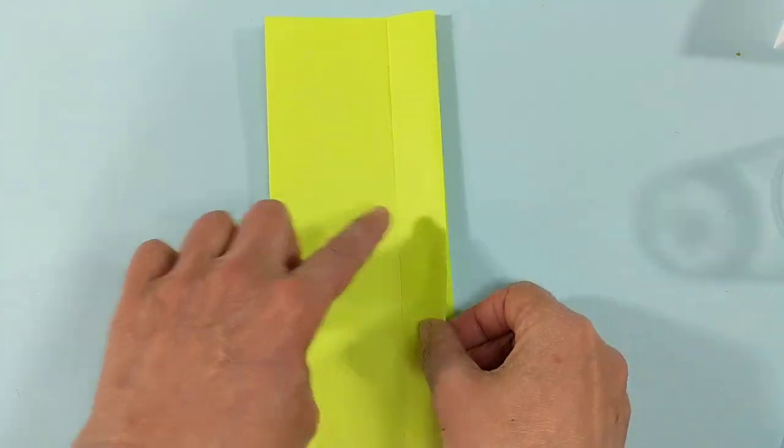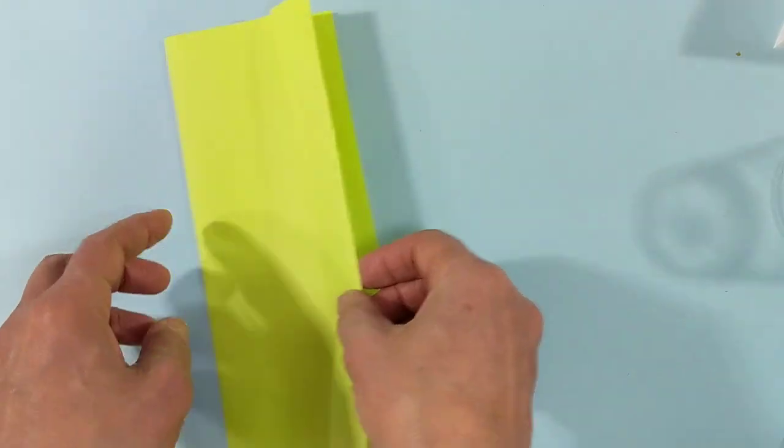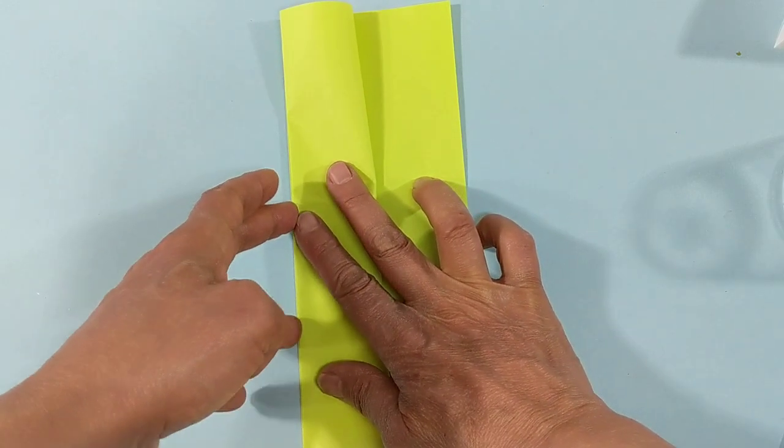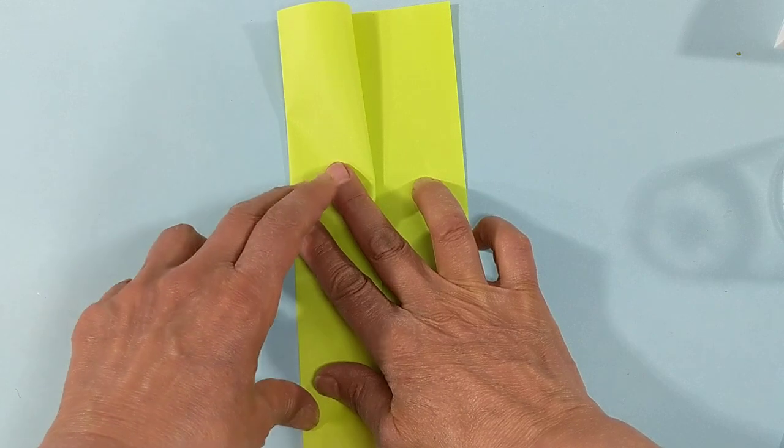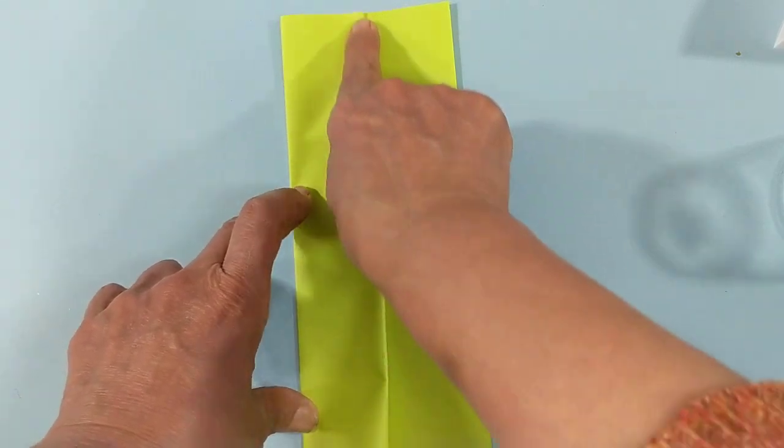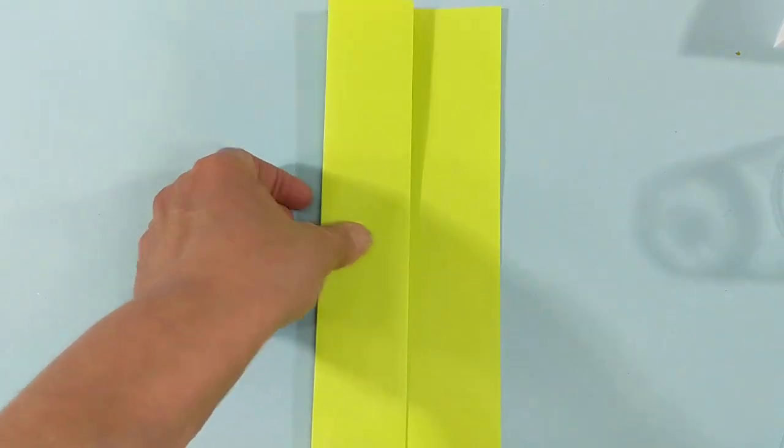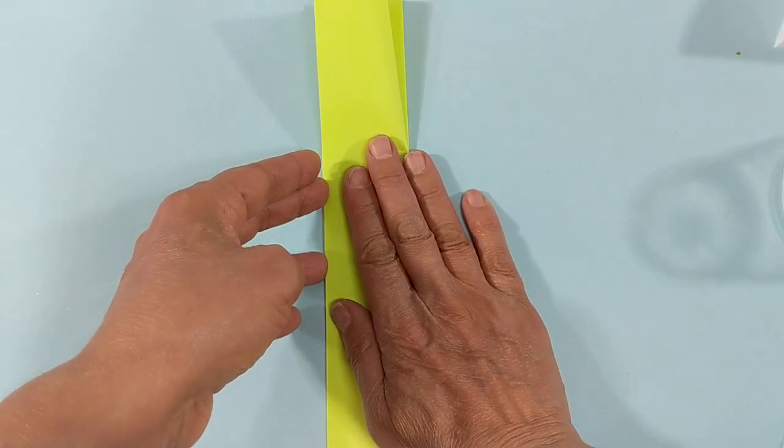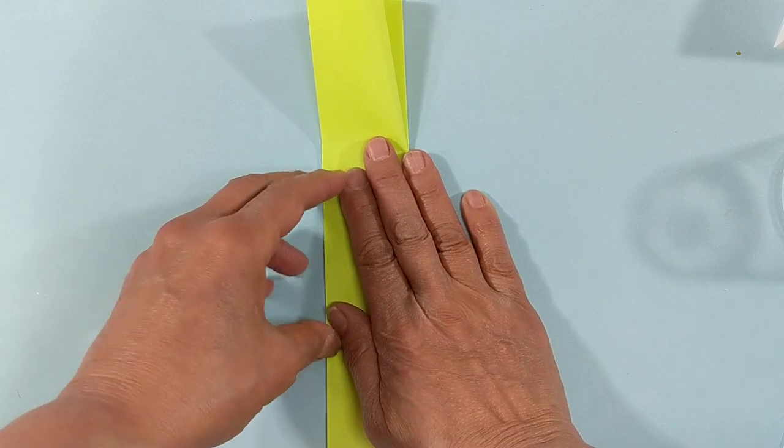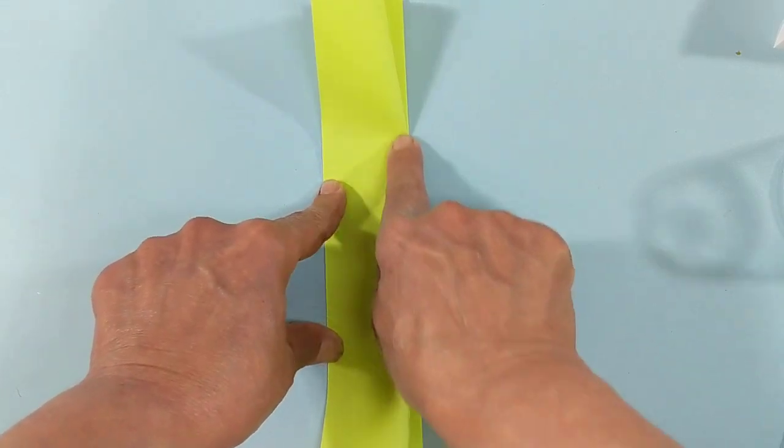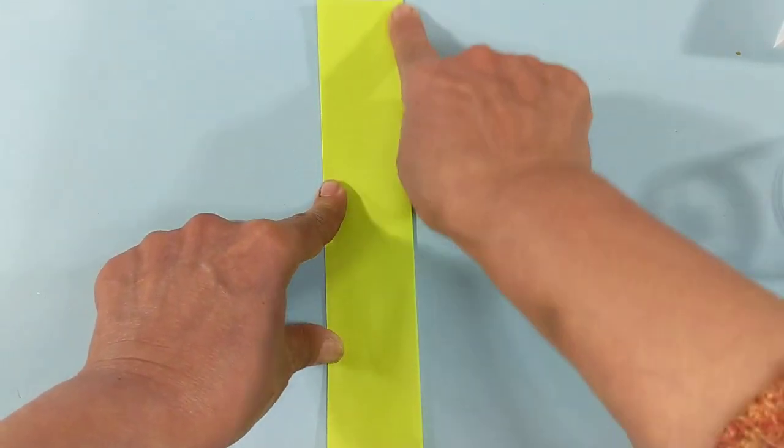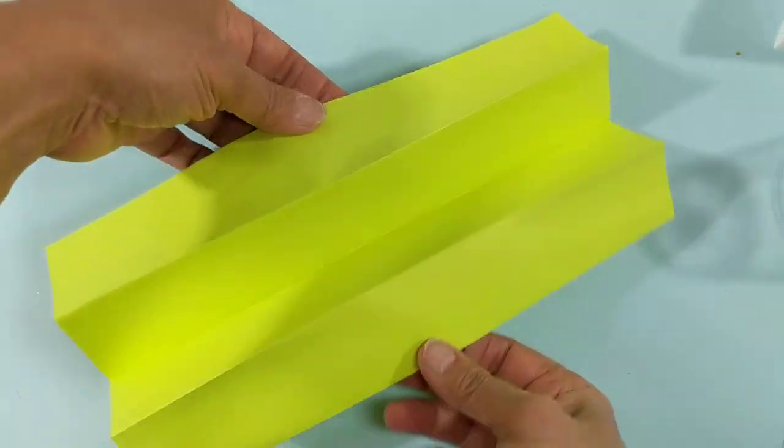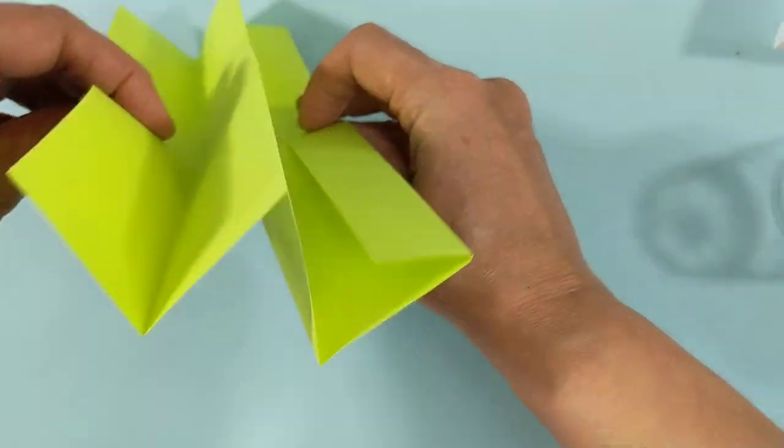Finishing up the fourths, I'm going to bring this open edge over to the middle line, line it up nicely, hold it, slide across, and go up and down. Turn it over, do the same thing. Line it up nicely. The sliding across is important, and you end up with fourths.